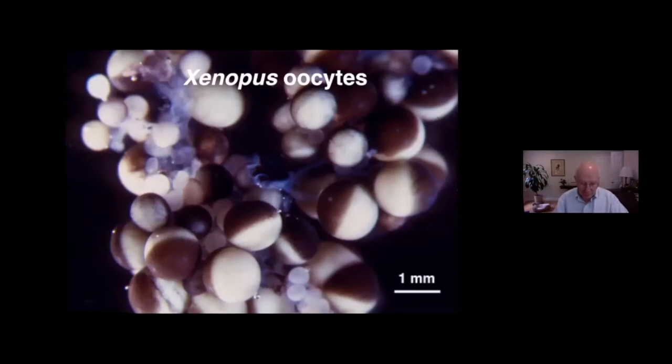Here we see a bit of ovary from the frog Xenopus, showing oocytes of all different sizes, from the very small transparent ones to the largest yolk-filled ones, which reach the size of a millimeter or so in diameter. For those of you not familiar with animal reproduction, I remind you that despite their size, these are single cells with a single nucleus.